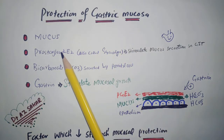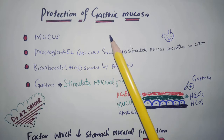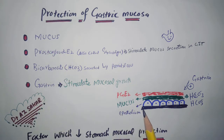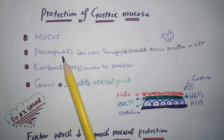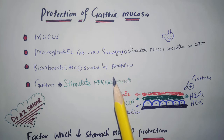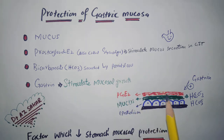The four most important protections of gastric mucosa: the first one is mucus. As you can see here, this is the basement membrane and this is the epithelium. The second protection is prostaglandin E2, which we can also call glycocalyx. As you can see here, this is the glycocalyx.